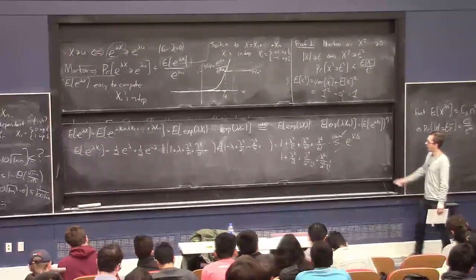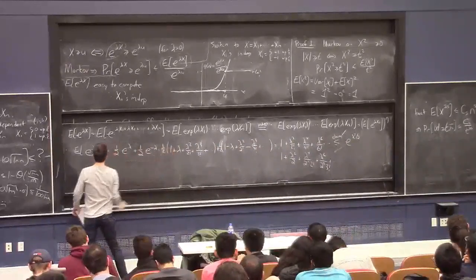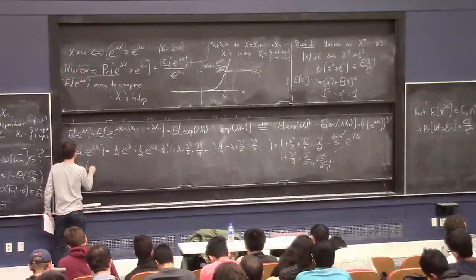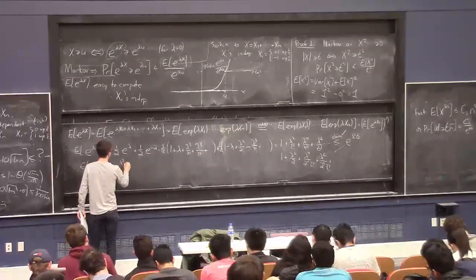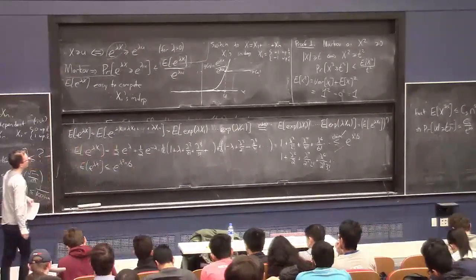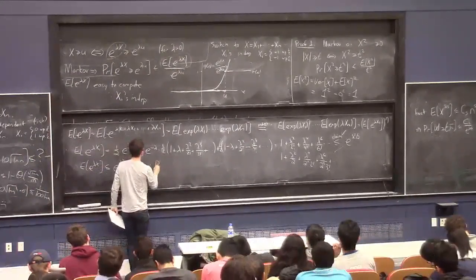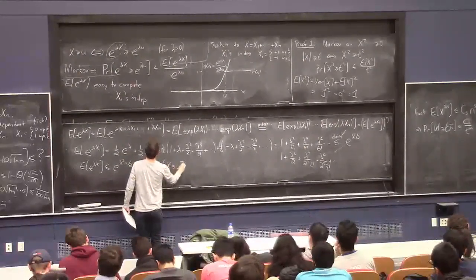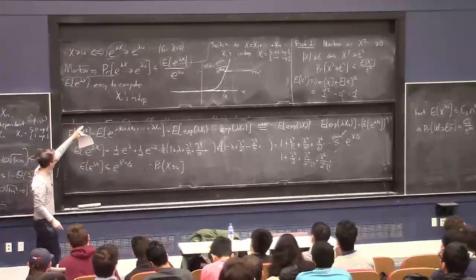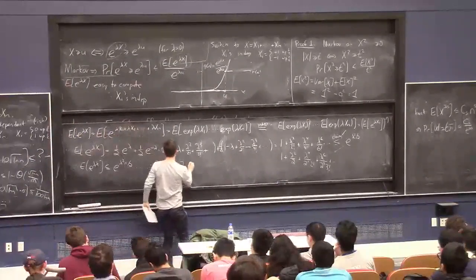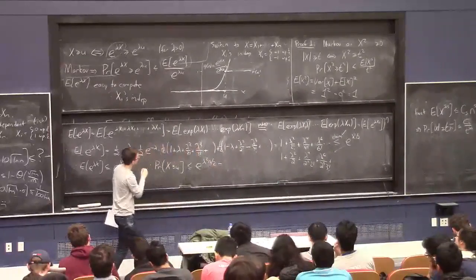So that shows the claim. We've bounded E[e^{lambda x1}] at most e^{lambda^2/2}. Therefore E[e^{lambda x}] is at most e^{lambda^2 n / 2}. Plugging this into our Markov bound: the probability that x is at least u is at most e^{lambda^2 n/2} divided by e^{lambda u}.